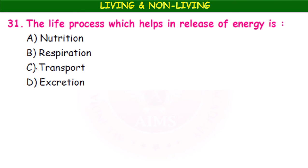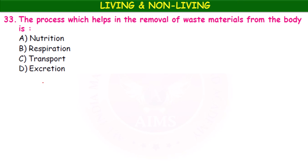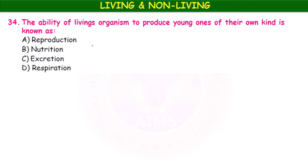The life process which helps in the release of energy is nutrition, respiration, transport, or excretion? Respiration is the process in which energy is released. Growth is described as only permanent and irreversible process. The process which helps in the removal of waste materials from the body is excretion. The ability of a living organism to produce young ones of its own kind is known as reproduction.